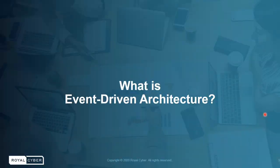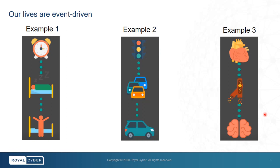Before we move on, it's very important to understand what events are and what is event-driven architecture. An event can be defined as a significant change in state. For example, you wake up when the alarm bell rings — the alarm is an event that triggers your mind to wake up. You stop your car when the traffic light changes to red. Your heart pumping blood is an event which triggers blood to flow to your brain. Event data helps you understand the workings of your business, and the one who processes this information with the right tools will always be ahead of the competition.